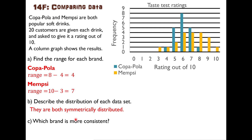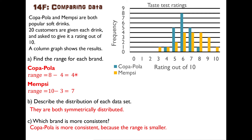Which brand is more consistent? Copapola is more consistent. Why? Because the range is smaller. A small range means that the results are more consistent — they're clustered around a very small number of responses. For example, nobody loves Copapola, but nobody hates it and gives it a three. So it's consistent — people generally have a similar opinion about it.